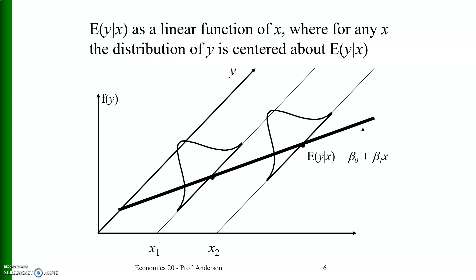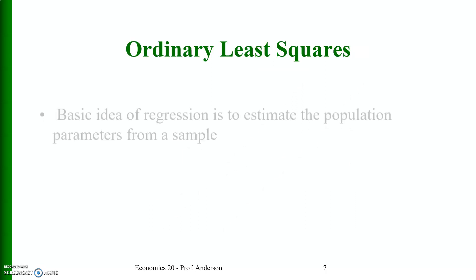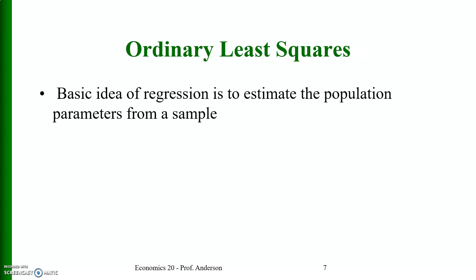This implies that E[y | x] = beta naught + beta_1 * x. The expected value of y given x is a linear function of x, and for any x the distribution of y is centered about E[y | x]. You may see this illustrated in the graph.